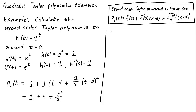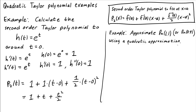Sometimes people like to give Taylor polynomial problems like the following: approximate ln of 1.1, or maybe ln of 0.9, using a quadratic approximation. The idea is to use a Taylor polynomial around a nearby point that can be evaluated by hand. For either of these two examples, the idea is to use a equals 1, since ln of 1 is easy to evaluate and it's close to either 1.1 or 0.9. Let's calculate the second order Taylor polynomial to the natural logarithm around x equals 1.